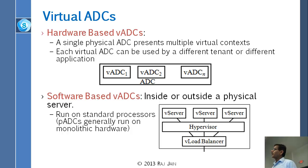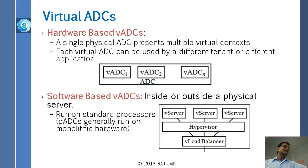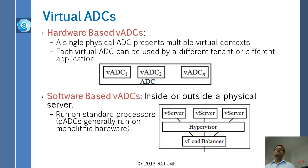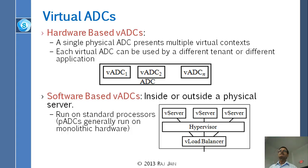The first step ADC companies took was to make their load balancers virtualizable — you could buy one big box from F5, but it would act as five different virtual boxes inside, with each customer getting their own piece, separated just like VMs. Then they said, let us forget the whole hardware thing and put it in software. Now these load balancers are software pieces put inside the server — running on the hypervisor alongside virtual machine servers. Companies like Cisco, F5, and VMware are selling software-based load balancers.